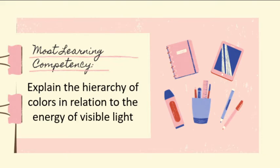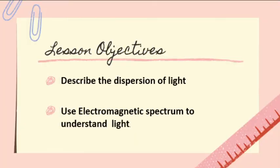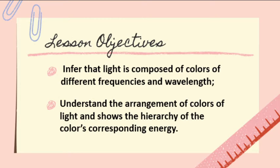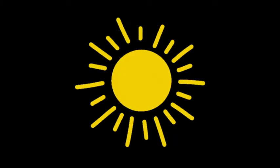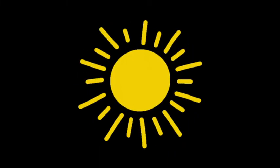Our most learning competency for this week is to explain the hierarchy of colors in relation to the energy of visible light. Lesson objectives: number one, describe the dispersion of light; number two, use the electromagnetic spectrum to understand light; infer that light is composed of colors of different frequencies and wavelengths; and understand the arrangement of colors of light showing the hierarchy of colors and corresponding energy.